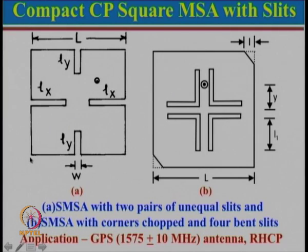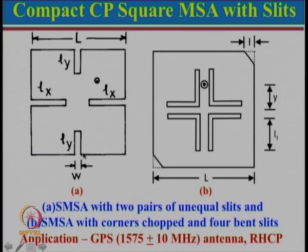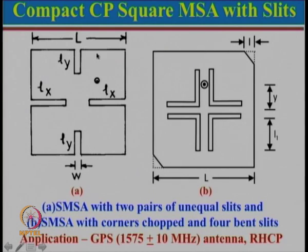There are many variations possible. Sometimes these are called slits cut in the patch or deep notches — the meaning is similar. One can also take lx equal to ly and instead vary the slot depths as l1 and l2, or take a square patch with notches. In all these cases, whether using L1/L2 or a notch variation, one can achieve a compact circularly polarized microstrip antenna.